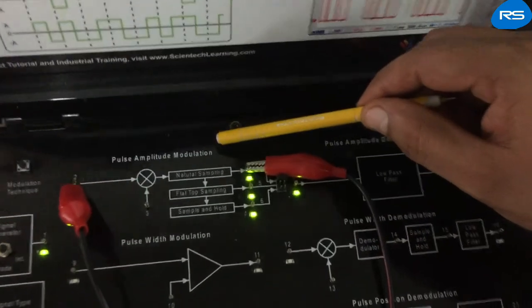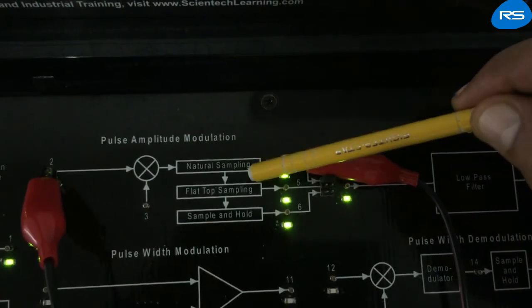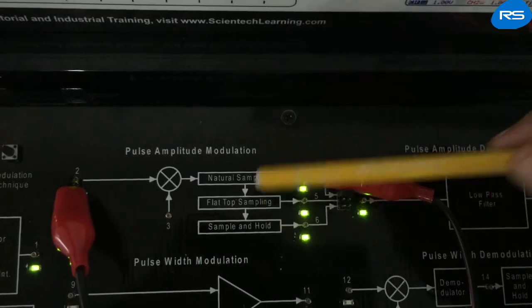Pulse amplitude modulation can have either natural sampling, flat top sampling or sample and hold.